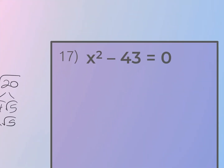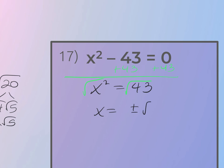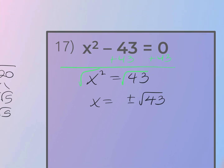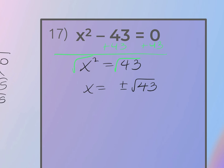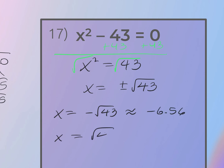For number seventeen, add 43 to both sides: x² = 43. Square root both sides: x = ±√43. Since 43 is prime and has no perfect square factors, leave it as is. So x = −√43 ≈ −6.56 and x = +√43 ≈ +6.56.